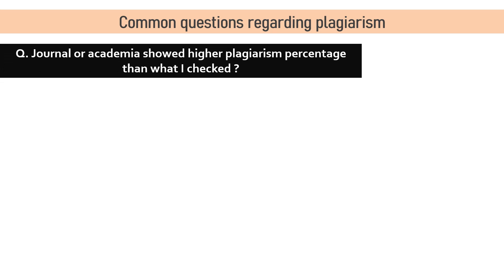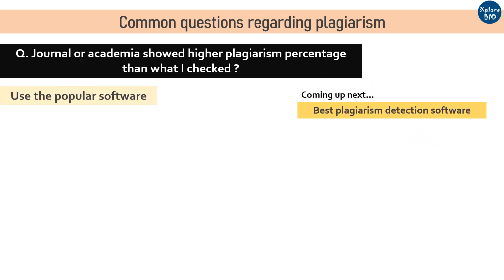If you checked plagiarism with software but the journal or institution shows a higher percentage, this is because different software follow different algorithms and the results vary. It is better to know in advance which software the organization uses and use the same. Use the best and most popular plagiarism software — and avoid free online software, which I will explain shortly.